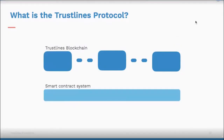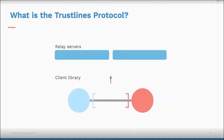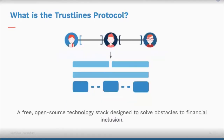Now I'll talk about the Trustlines protocol. It consists of four components: the Trustlines blockchain — a minimum viable proof-of-stake sidechain of Ethereum; the smart contract system, which stores all the business logic; relay servers, an optional service that calculates optimal paths for routing transactions through the network; and the client library, a high-level API for interacting with the smart contracts via the relay server on the blockchain. Trustlines protocol is a free, open-source technology stack designed to solve obstacles to financial inclusion. It is agnostic to the idea of people-powered money and can be used for any use case by anybody.